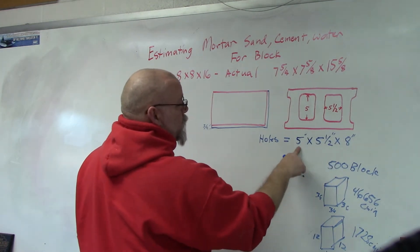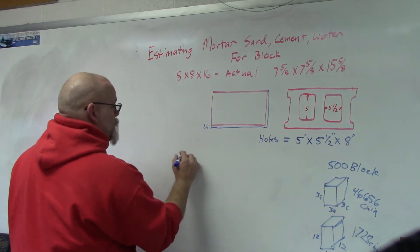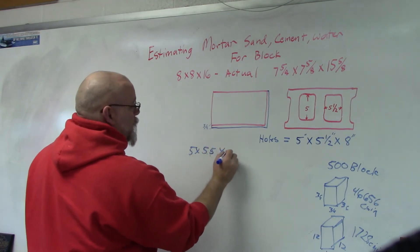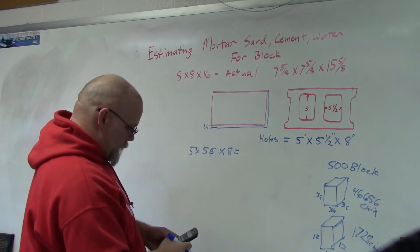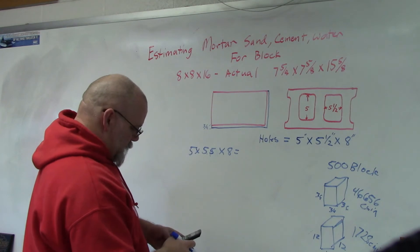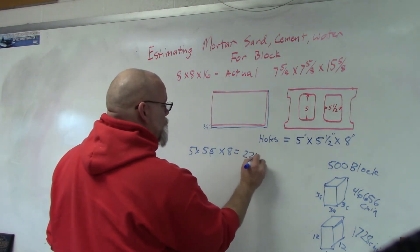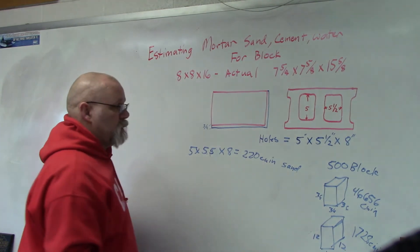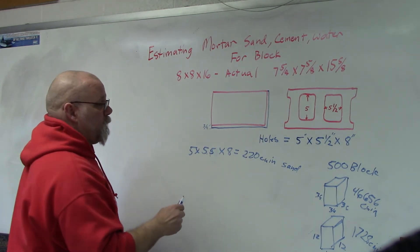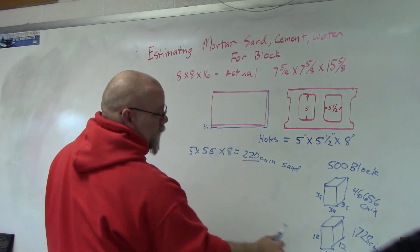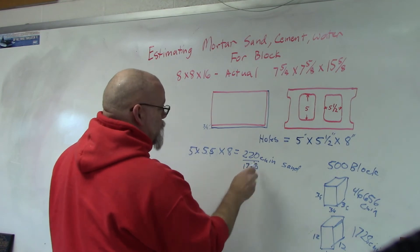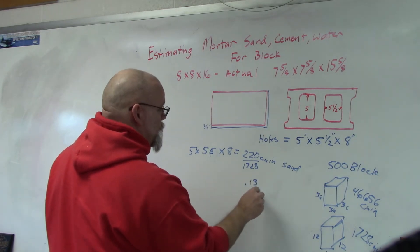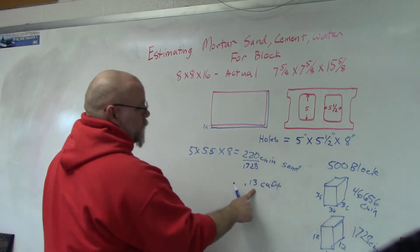We're going to use the hole dimensions: 5 x 5-1/2 x 8 inches. Five times five-point-five times eight gives us 220 cubic inches. We're figuring sand because sand makes up the most volume of your mortar. Dividing by 1,728 gives us 0.13 cubic feet per block.